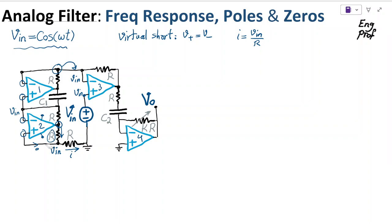So the voltage drop across these two resistors is the same in any direction. That current i is flowing upward through the resistor R. This current i cannot flow through the wire going to the left side because that wire leads to the input terminals of the op-amp, which have infinite impedance, so no current can flow that way. So current i has to continue going upward and goes to the capacitor, resulting in a voltage drop across it.